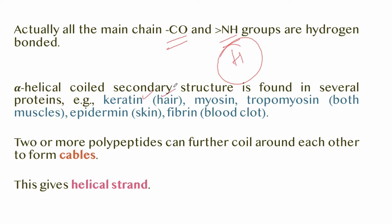Myosin and tropomyosin are found in muscles, epidermin in skin, and fibrin in blood clots — all are examples of alpha helix proteins. Two or more polypeptides can further coil around each other to form cables, giving rise to a helical strand.